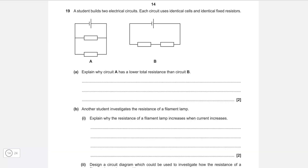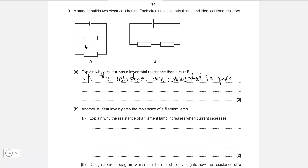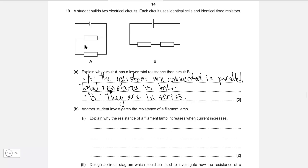A student builds two electrical circuits, each using identical cells and identical fixed resistors. Explain why circuit A has a lower total resistance. In circuit A the resistors are connected in parallel, meaning the total resistance is half the individual resistor value. Whereas in circuit B they are in series, so the total resistance is doubled.